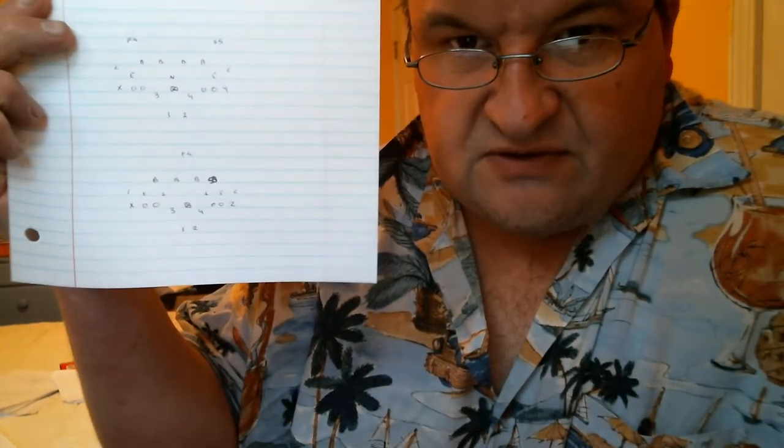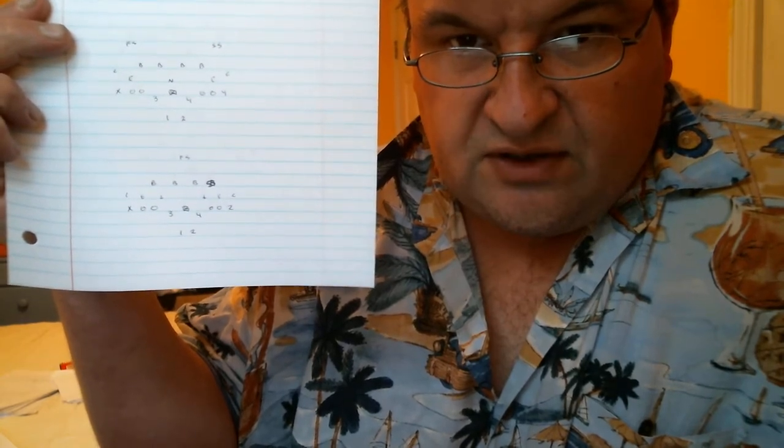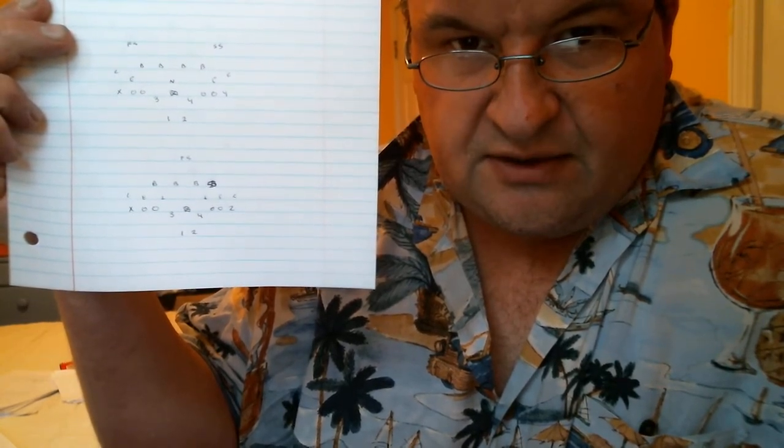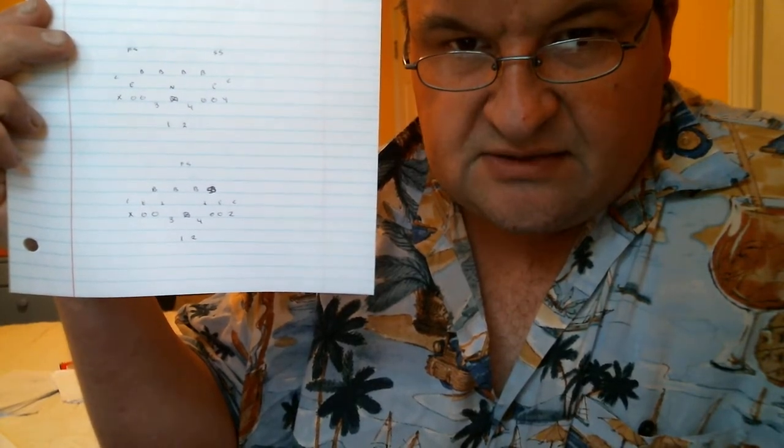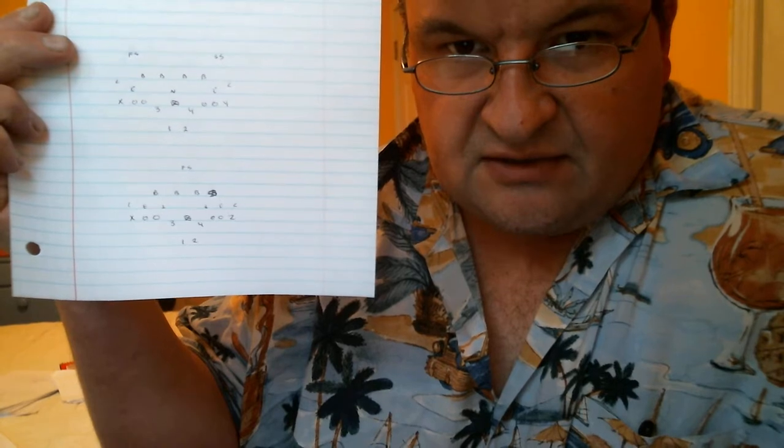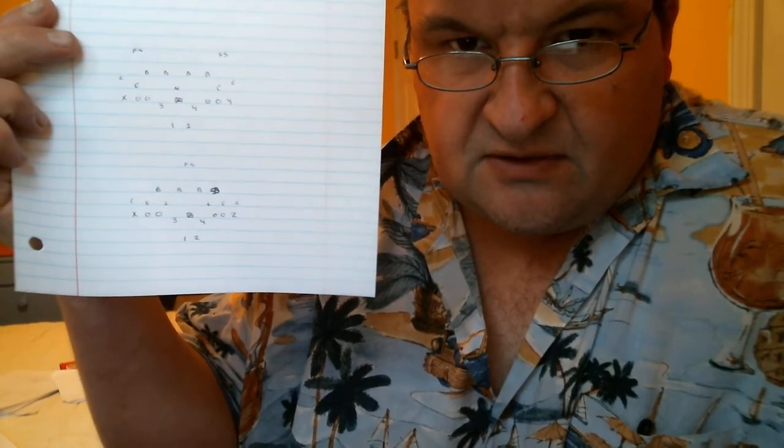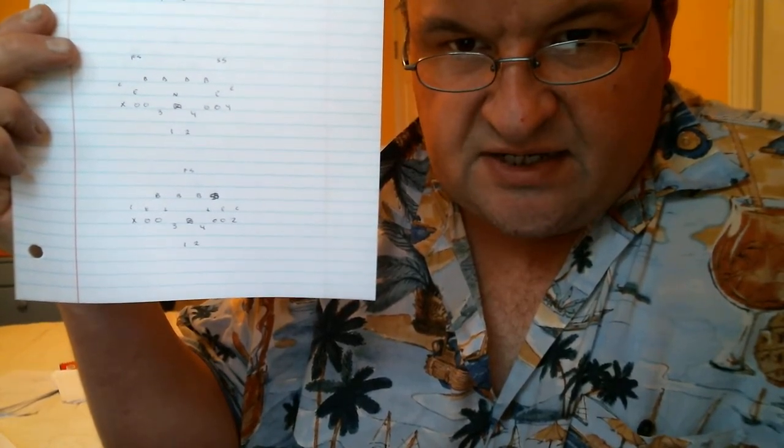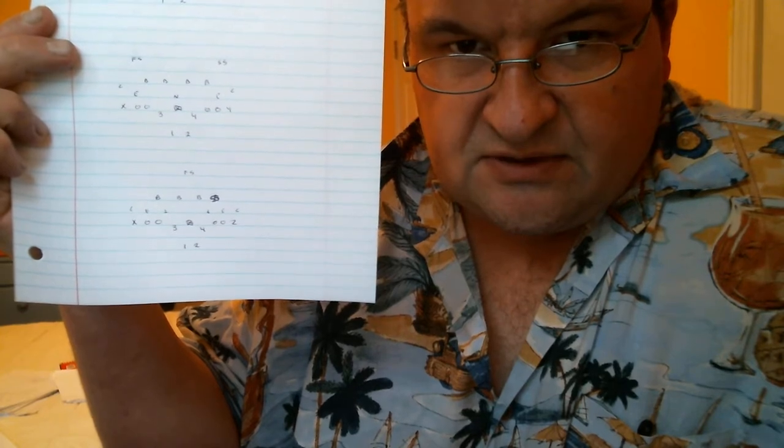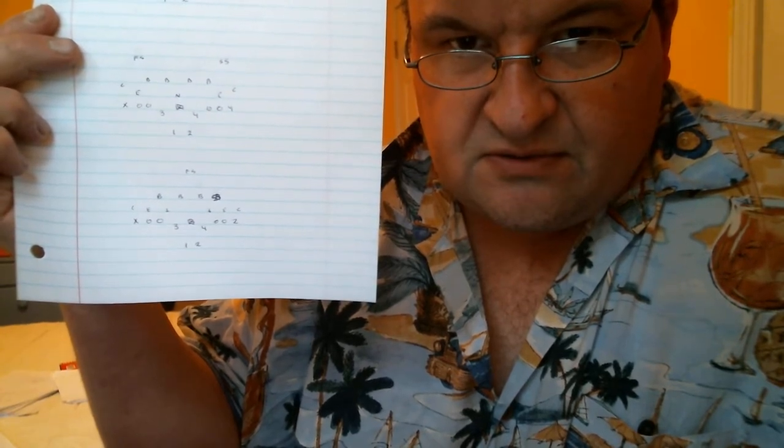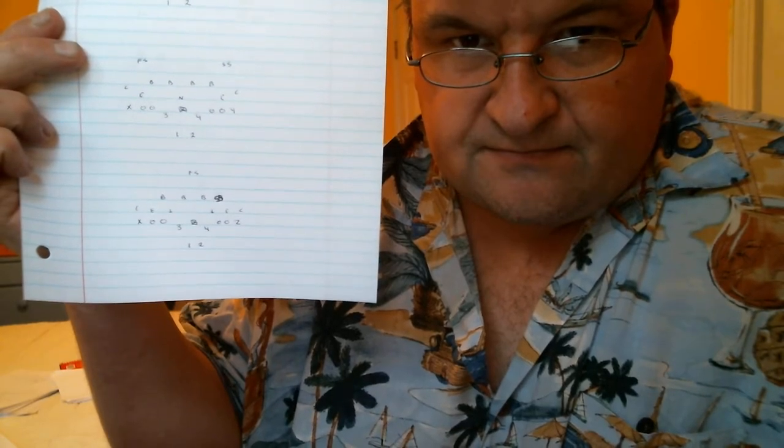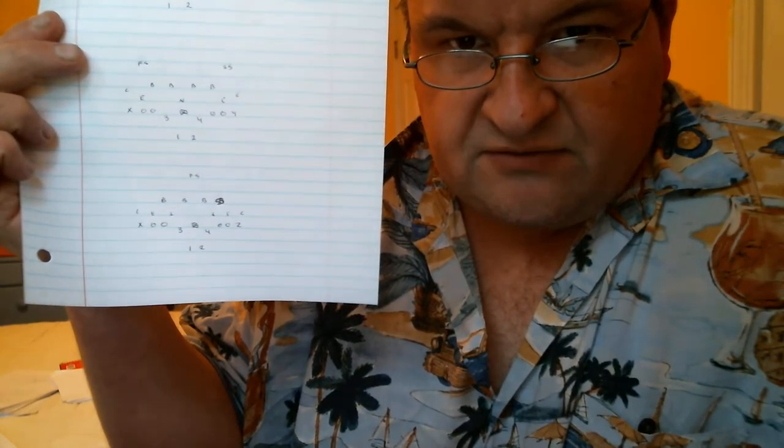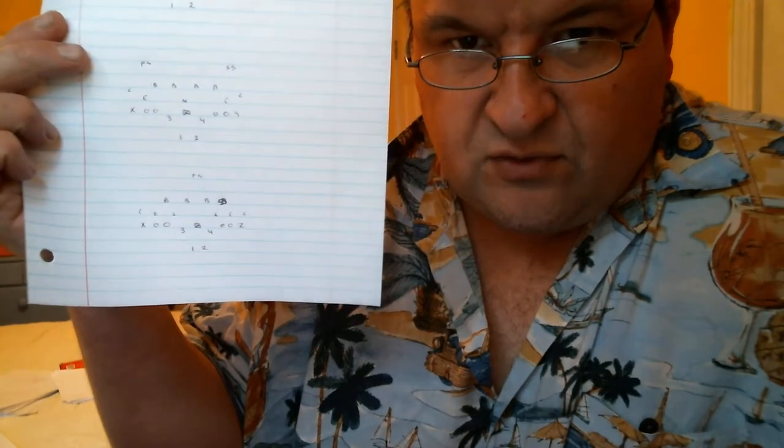The third defensive set is a 4-3 with a strong safety rotated down. Corners are up against X and Z. Ends are covering the tackles. My defensive tackles are shaded inside the guards in between the gap between the guards and your 3 and 4 running back.